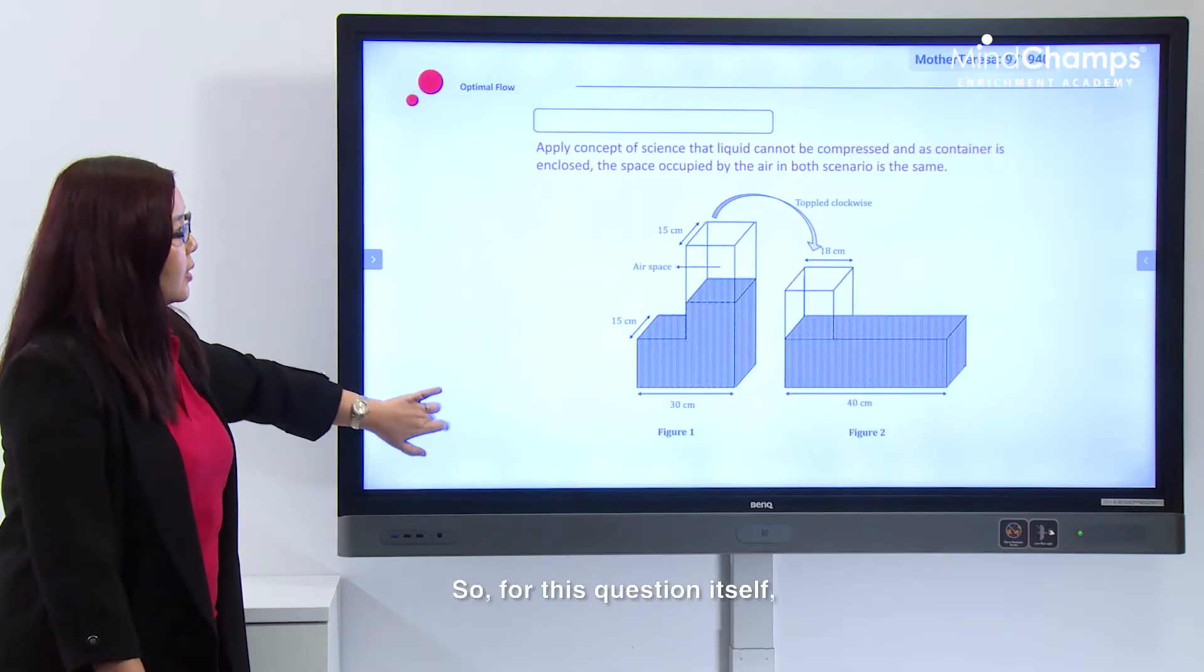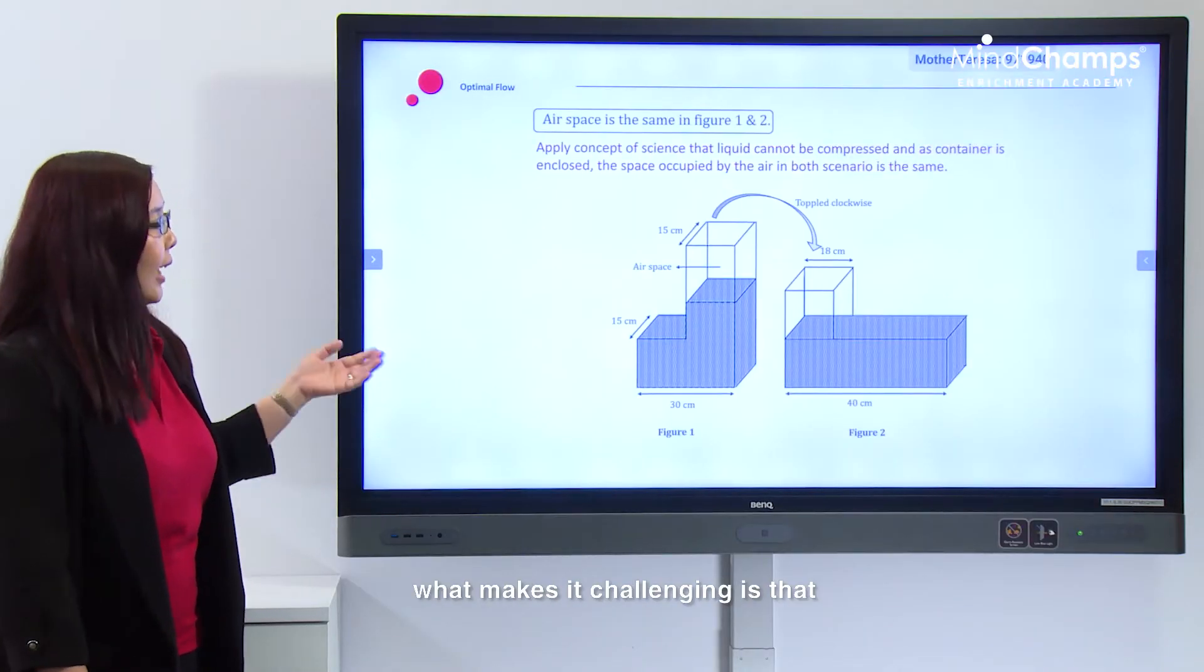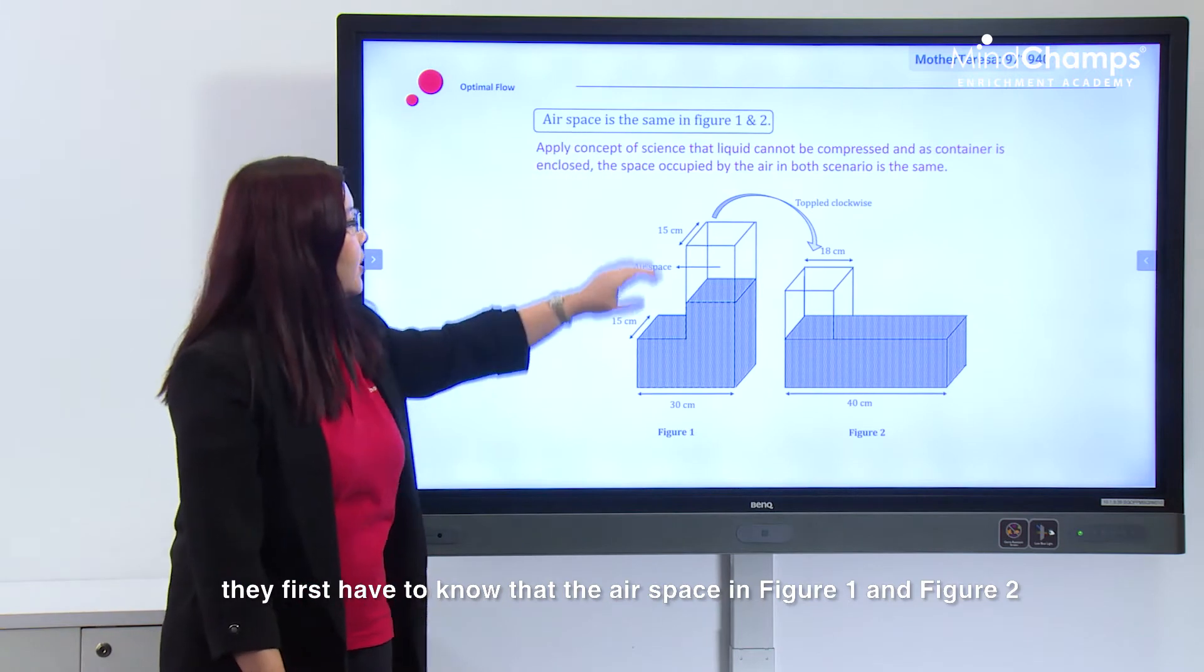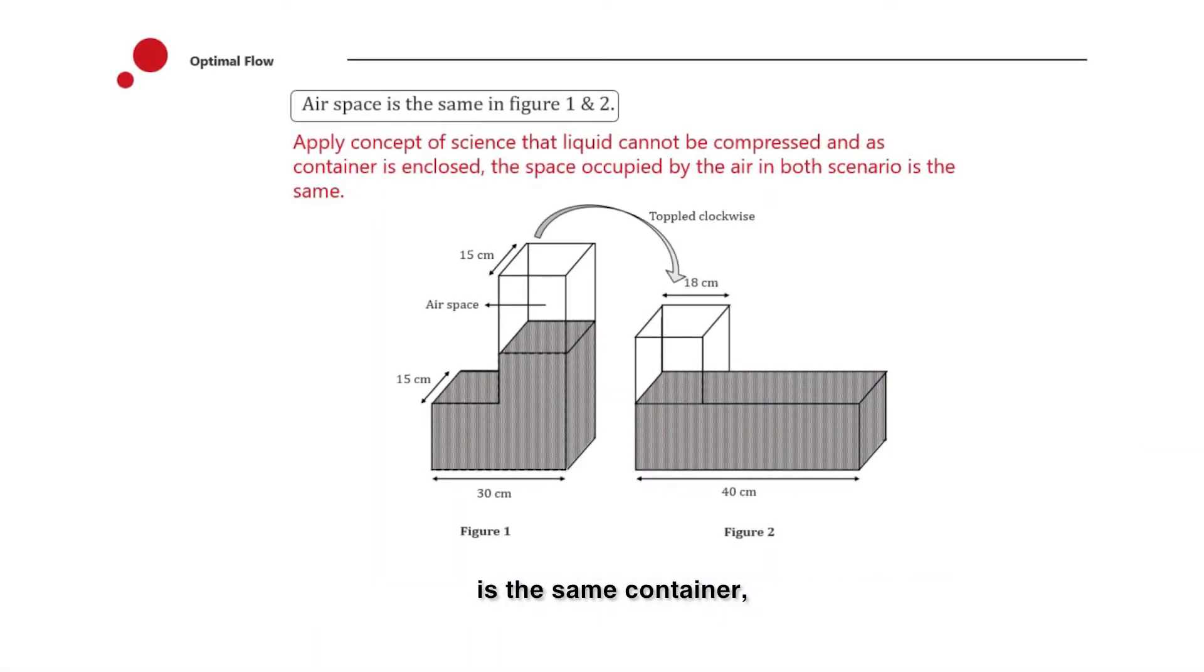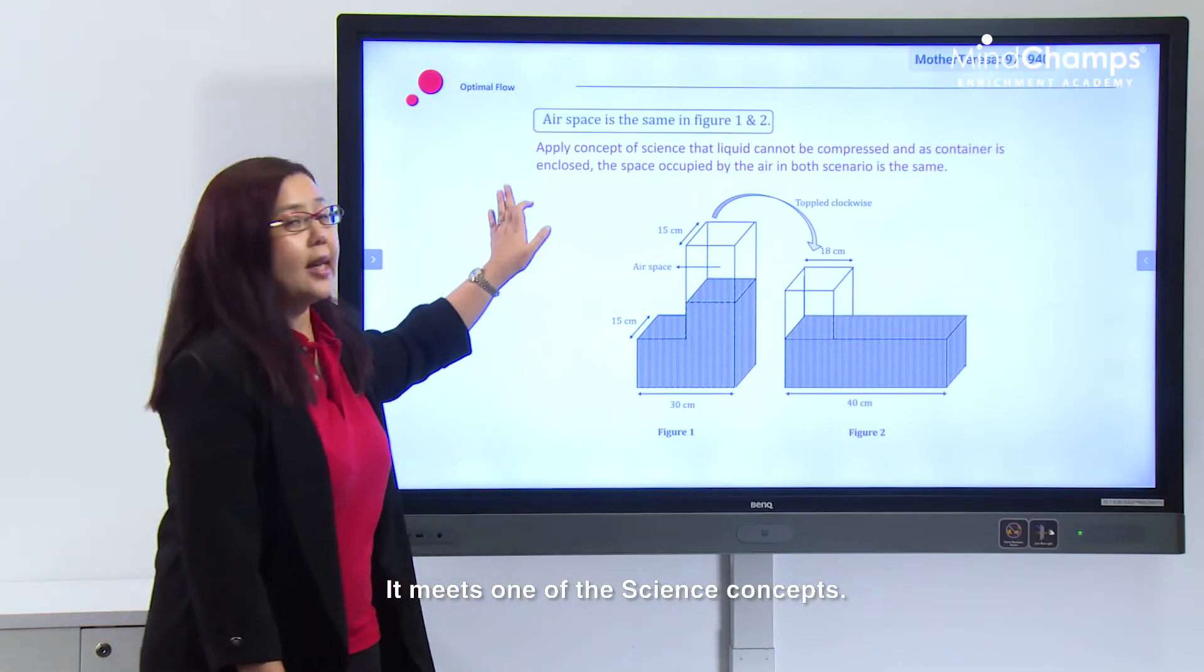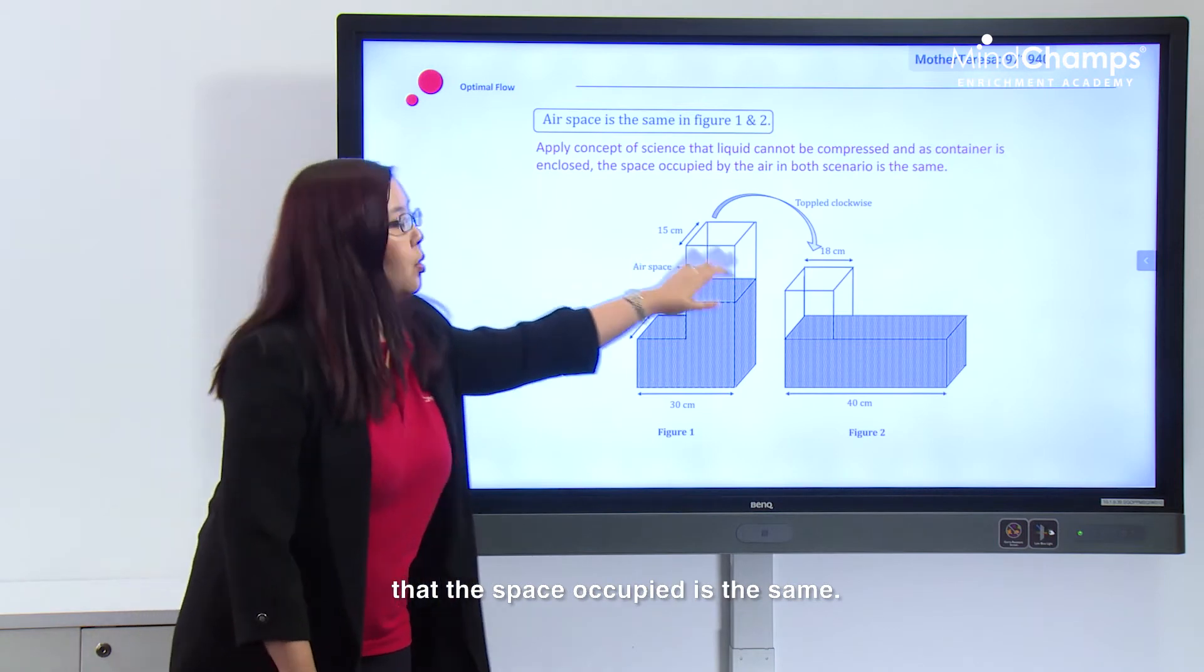For this question, what makes it challenging is that students first have to know that the airspace in Figure 1 and Figure 2 is the same container, just that it has been toppled clockwise. This requires understanding a science concept: that the space occupied is the same.